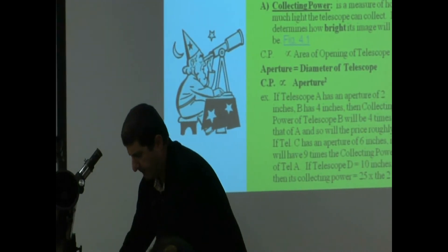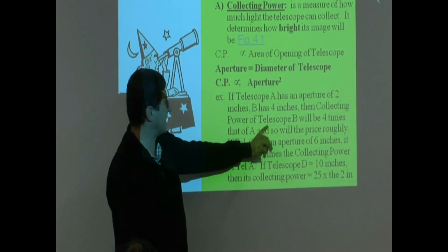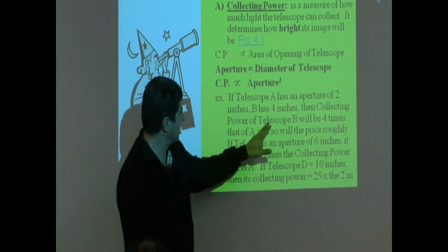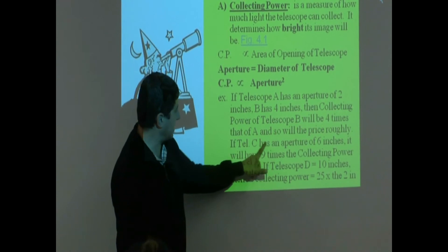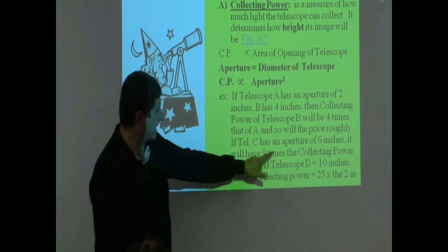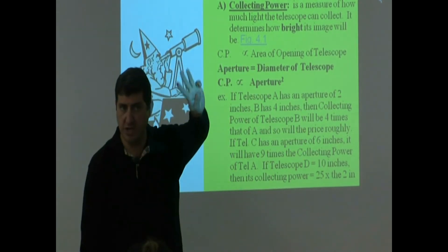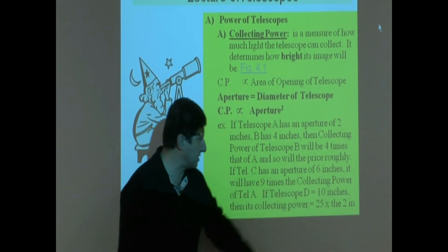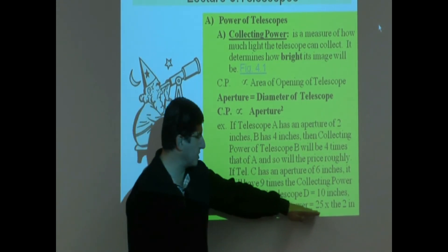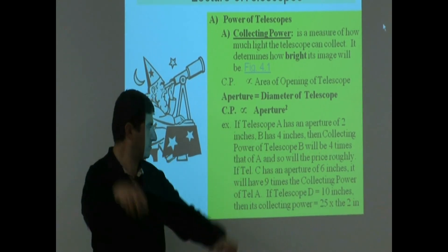So if telescope A has an aperture of two inches and B has four inches, then the collecting power of telescope B will be four times, because B is twice as big as A. And so will the price, roughly. If telescope C has an aperture of six inches, it will have nine times the collecting power — six over two is three, three squared is nine. If telescope D has 10 inches, its collecting power is 25 times the two-inch telescope. Really, really big.